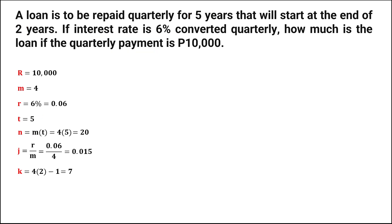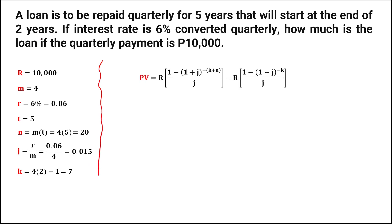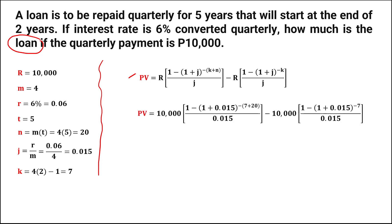Since we now have all the values, we can find the loan or the present value using the formula. We have the regular payment of 10,000 pesos, then J, the interest per period, that's 0.015, then K, the periods of deferral, that's 7, and N, the number of periods, that's 20.